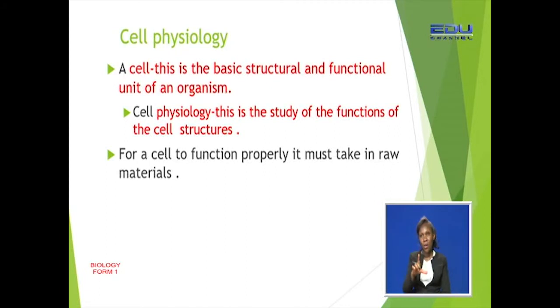For these structures to perform properly and be efficient in their work, they must take in raw materials. Examples of the structures are organelles such as ribosomes, mitochondria, and chloroplasts, among many other organelles found within the cell.